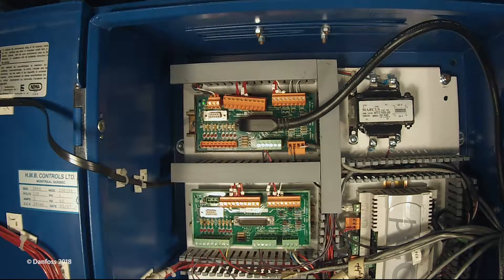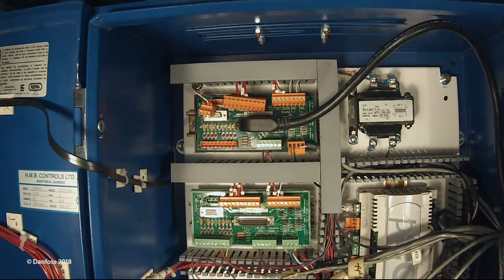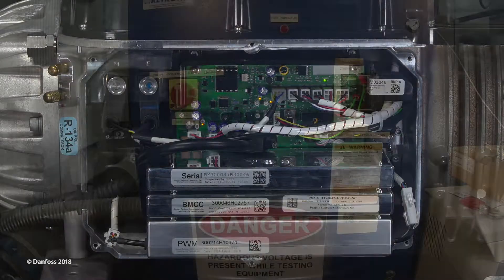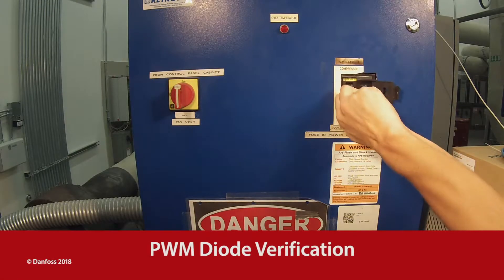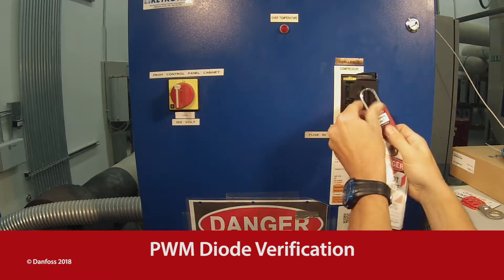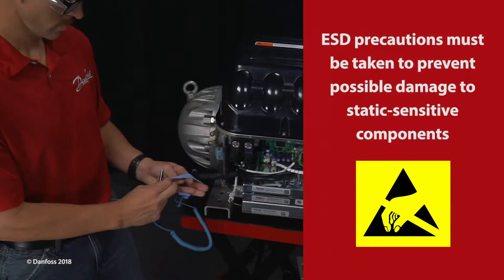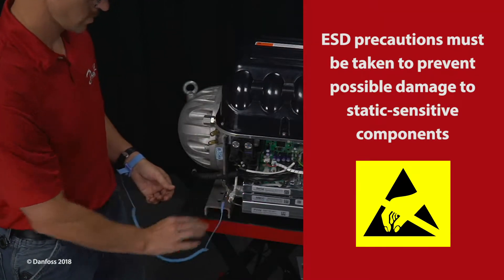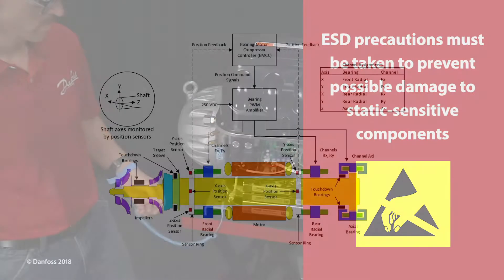Remove the service side cover to verify the PWM diodes. Power to the compressor must be off. ESD precautions must be taken to prevent possible damage to static sensitive components.